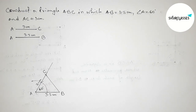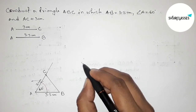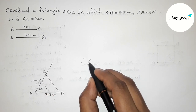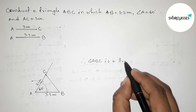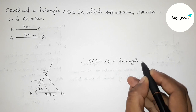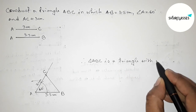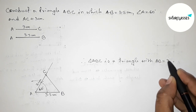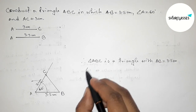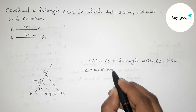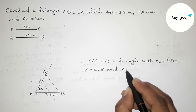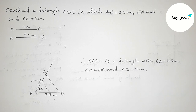Therefore, triangle ABC is constructed with side AB equals 3.5 centimeters, angle A equals 60 degrees, and AC equals 3 centimeters. That's all — thanks for watching. If this video is helpful to you, please share it with your friends.